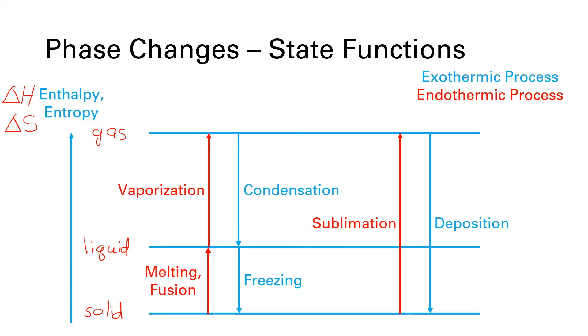If we reverse these processes and we take a gas and we turn it into a liquid, we're going to call that condensation. And if we take that liquid and remove more energy and turn that into a solid, we call that freezing. Condensation and freezing both involve removing thermal energy from the sample. So as that thermal energy leaves, we call that an exothermic process. And the sign of delta H is negative.